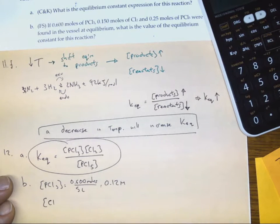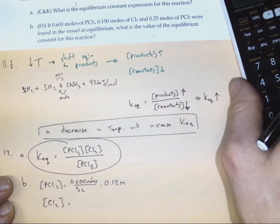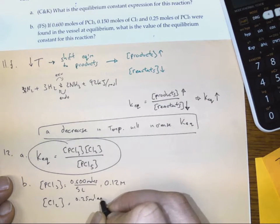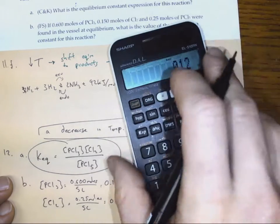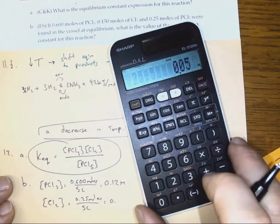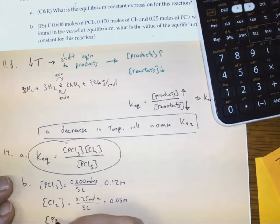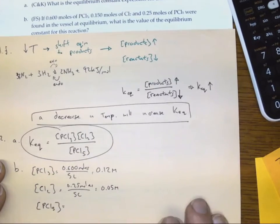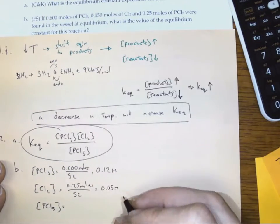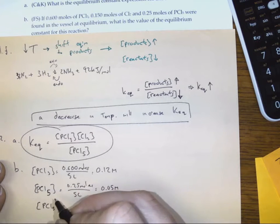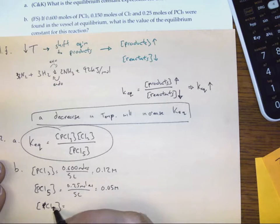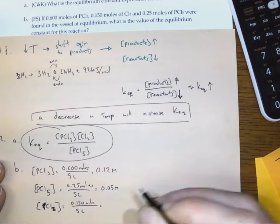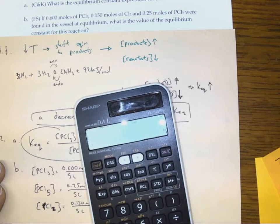The concentration of chlorine is 0.25 moles for every 5 liters, which is 0.05 molar. And the concentration of PCl₅ — phosphorus pentachloride — is... actually, that's the concentration of phosphorus pentachloride, and we want to find the concentration of chlorine here, which is 0.150 moles for every 5 liters: 0.15 divided by 5 = 0.03 molar.